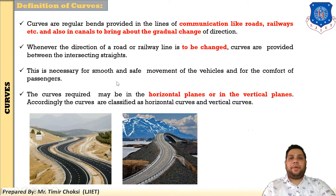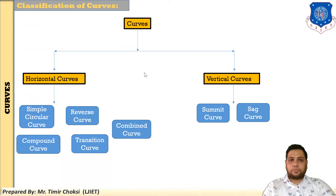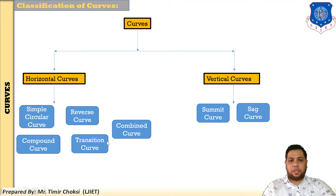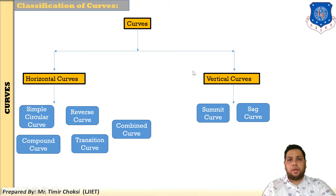I have explained the classification of curves based on horizontal and vertical planes. Curves are classified into two types: horizontal curves and vertical curves. In horizontal curves, there are different types: simple circular curve, reverse curve, compound curve, transition curve, and combined curve. In vertical curves, there are two types: summit curve and sag curve, or valley curve. This is the basic classification of curves, and these curves are used for alignment — changing the alignment of roads, railways, or canals.